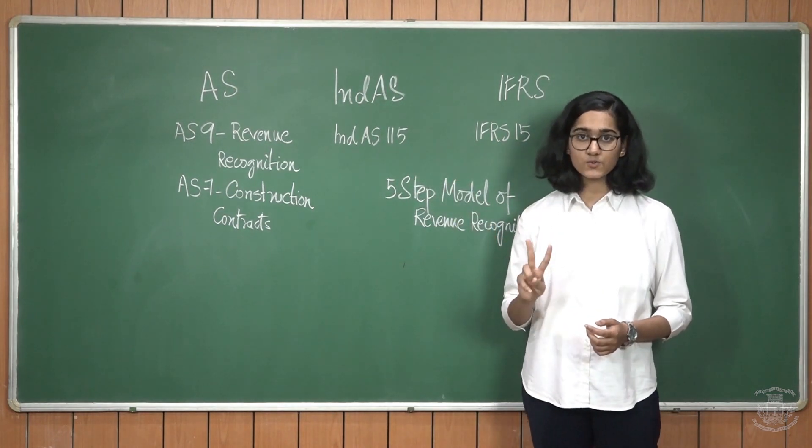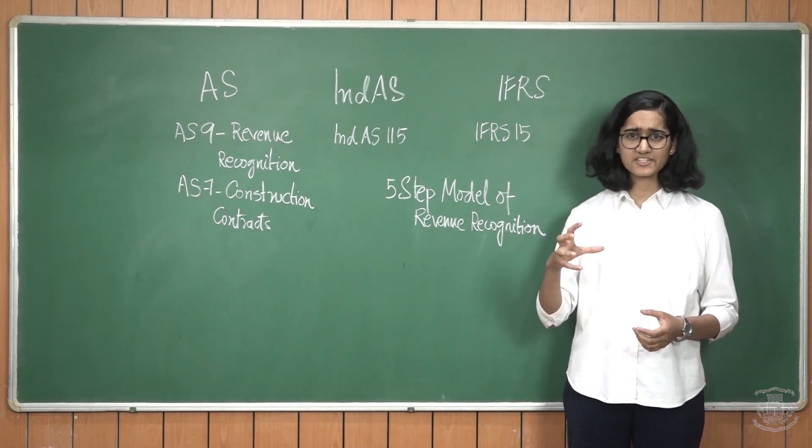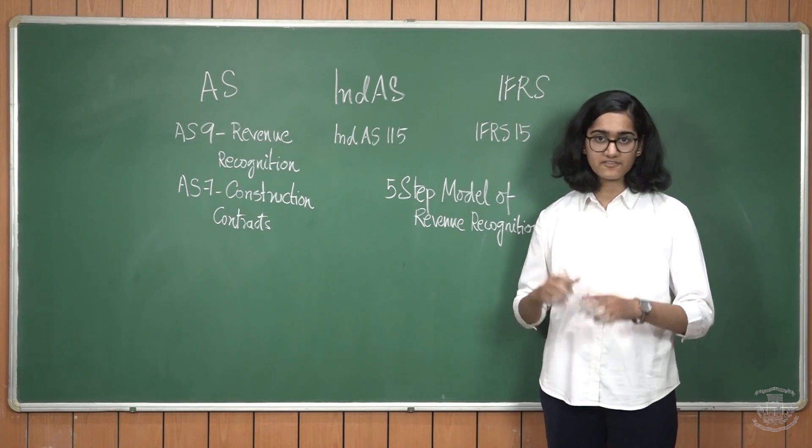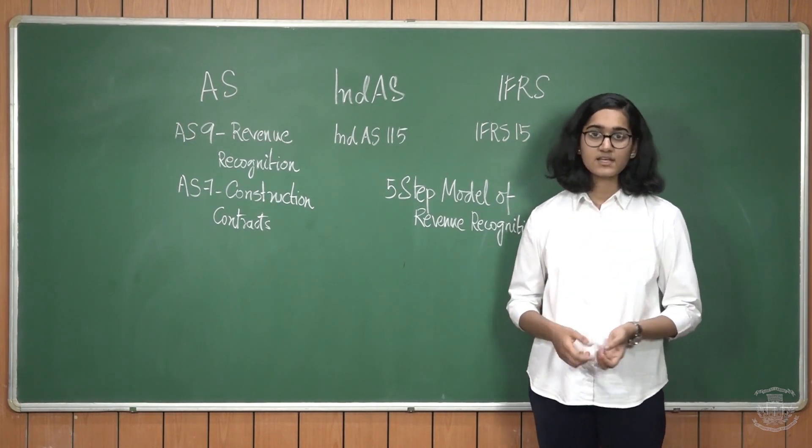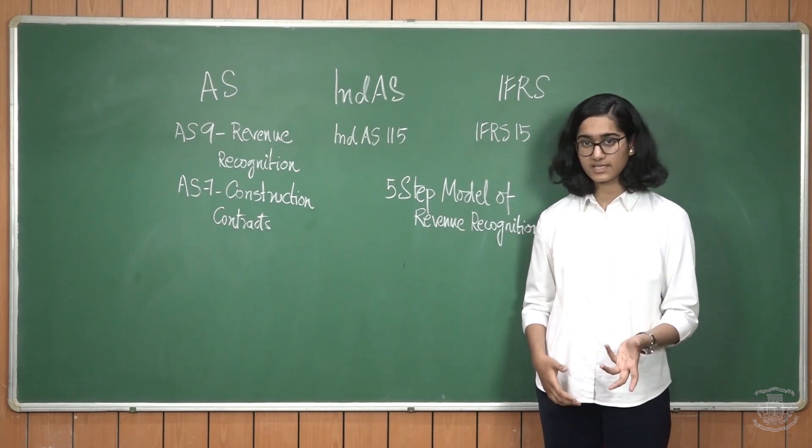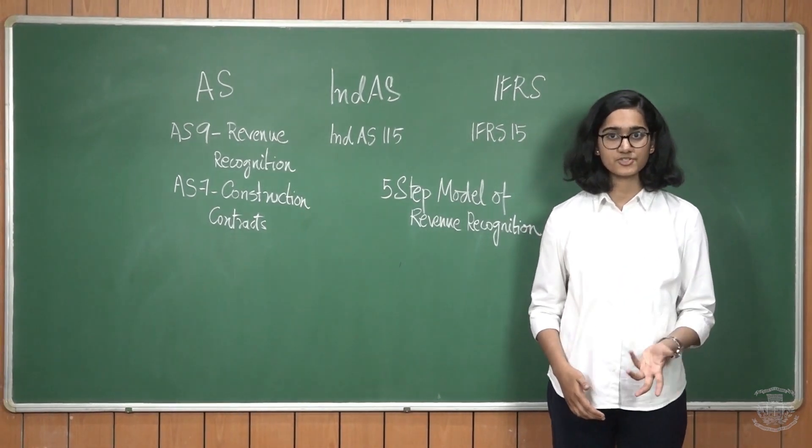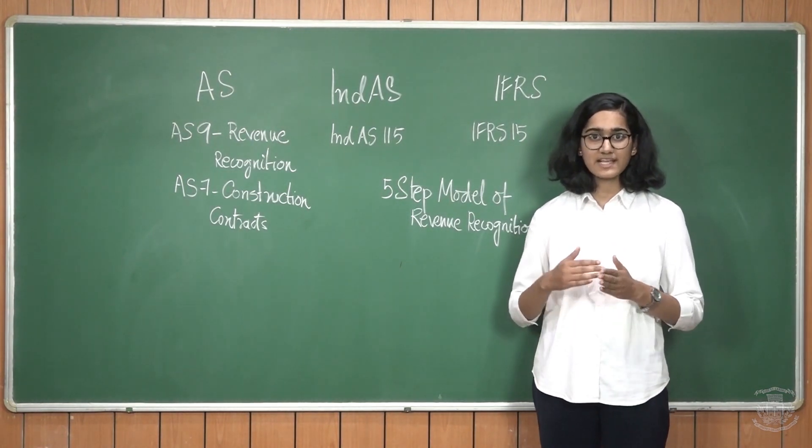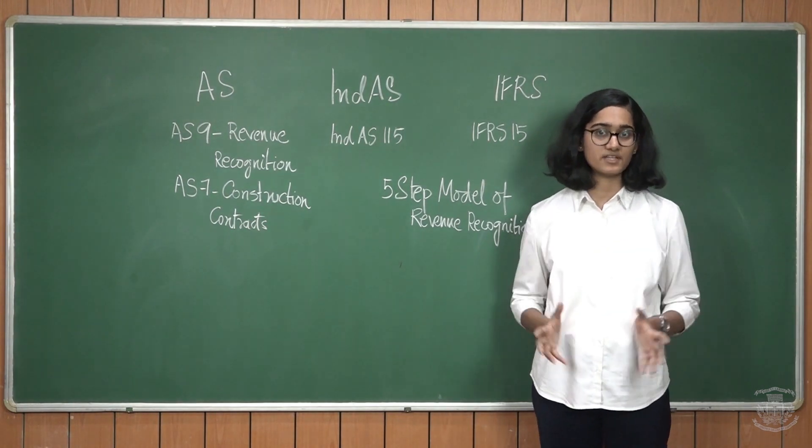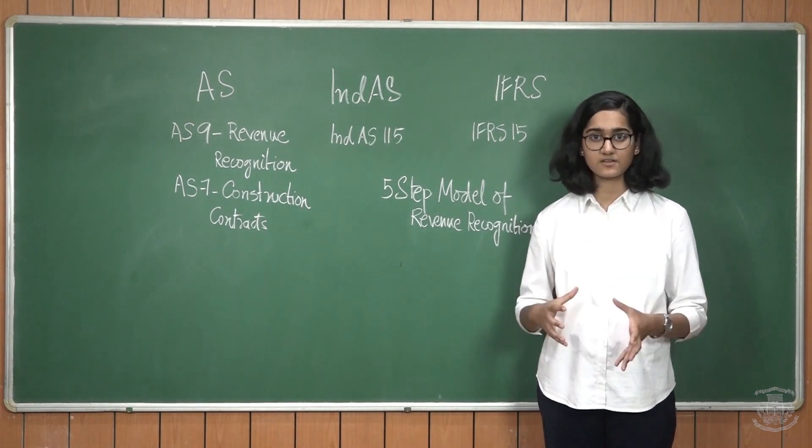Step number two states that we need to determine the transaction price. Transaction price refers to the price that the entity will pay for the entire contract. Step number three says that we need to identify the performance obligations in the contract. Performance obligation is nothing but what the entity promises to deliver to the customer in that particular contract. That also has to be clearly defined in the contract.